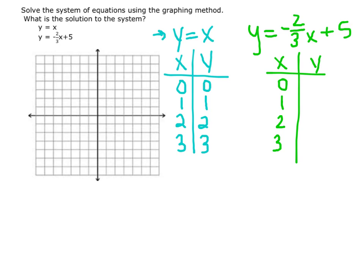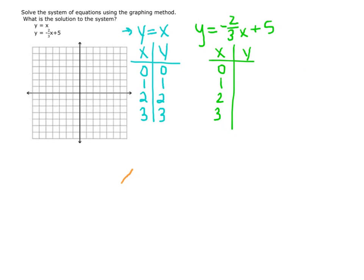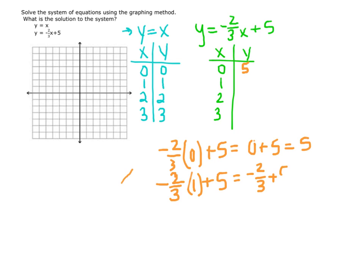Let's plug in the x values into the equation. We have negative 2 thirds times 0 plus 5 equals 0 plus 5, which is 5. When x equals 0, y equals 5. Now, when x equals 1, we have negative 2 thirds times 1 plus 5 equals negative 2 thirds plus 5, which equals 4 and 1 third.